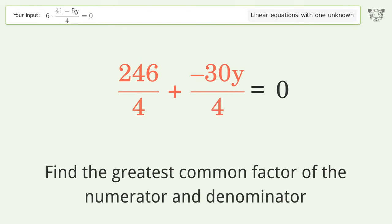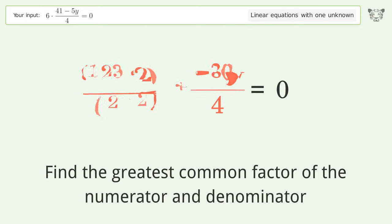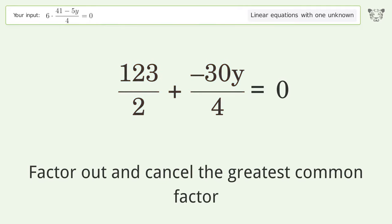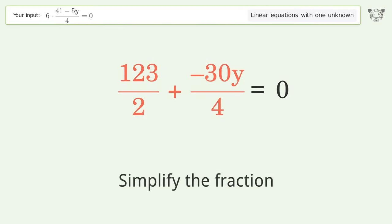Find the greatest common factor of the numerator and denominator. Factor out and cancel the greatest common factor, then simplify the fraction.